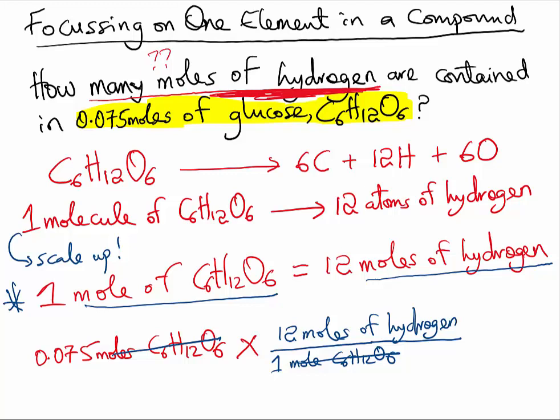If you multiply this out in your calculator, you should get 0.90 moles of hydrogen.